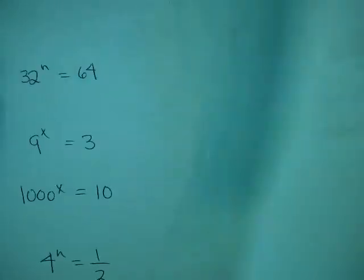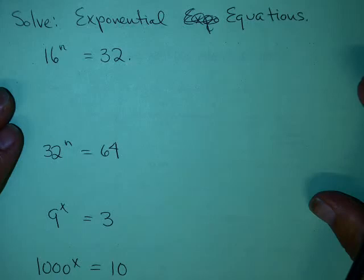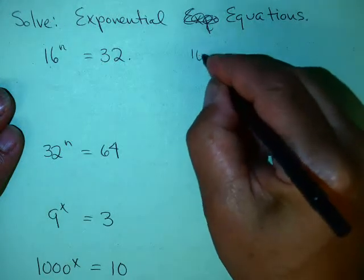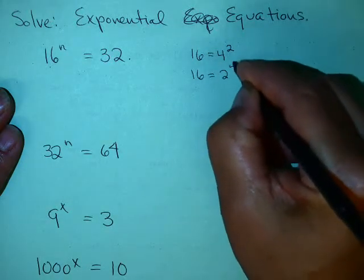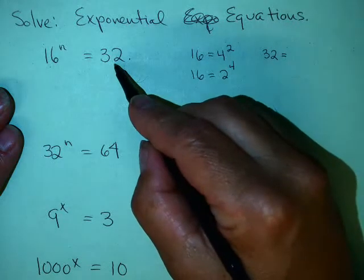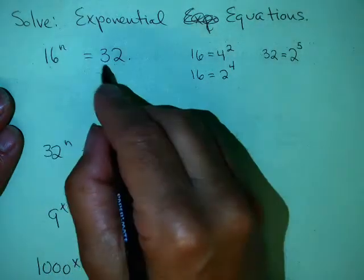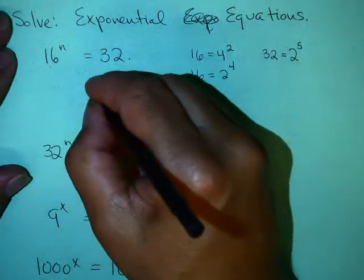These rules of exponents are useful when we work with exponential equations. We can solve exponential equations without logarithms if these equations can be written to the same base. For example, 16 equals 4 squared, and also 16 equals 2 to the 4th. And 32 is 2 times 2 times 2 times 2 times 2, which is 2 to the 5th. So if we can write the equation so that we have the same base on each side, we can find the value of n.